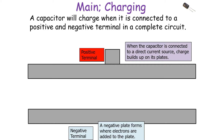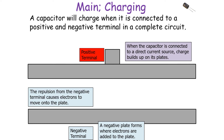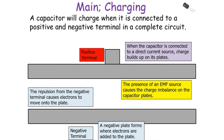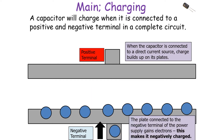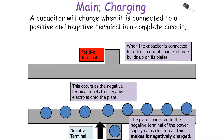A negative plate forms where electrons are added to the plate. The repulsion from the negative terminal causes the electrons to move onto the plate, so the presence of an EMF source causes the charging imbalance on the capacitor plates. The negative plate becomes negatively charged as the negative terminal of the power supply pushes those electrons onto that negative plate — this occurs because the negative terminal repels those negative electrons onto the plate, as like charges repel each other.